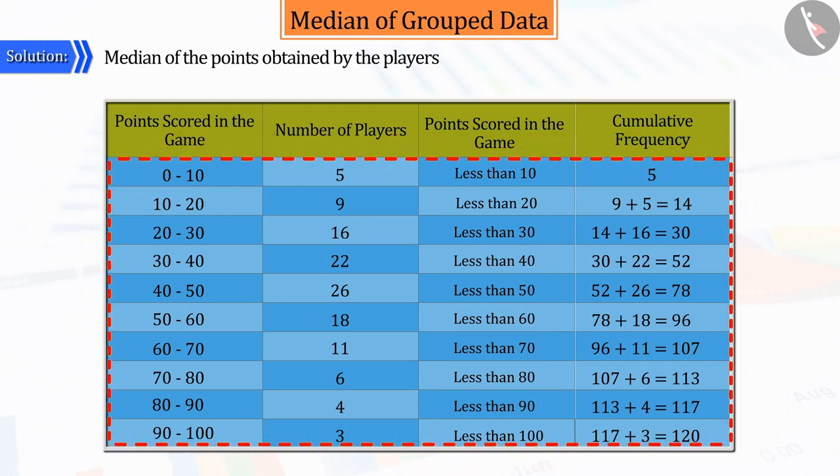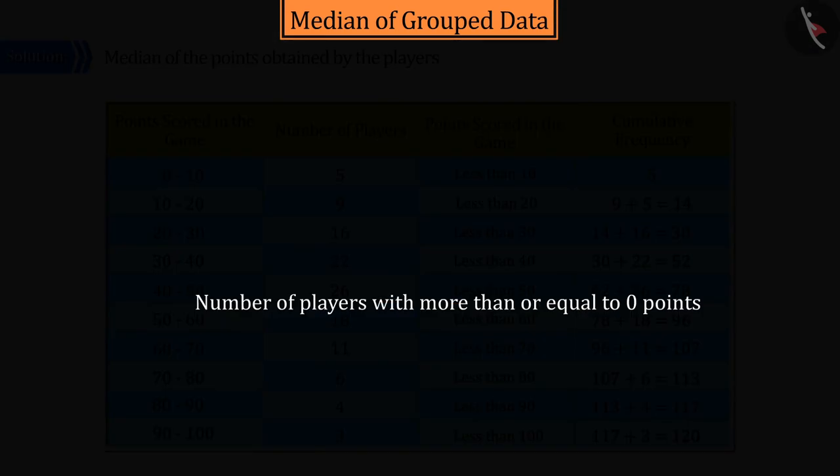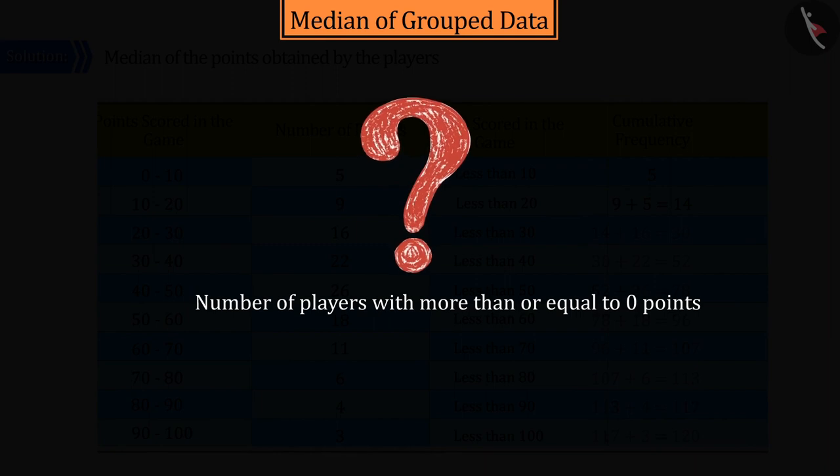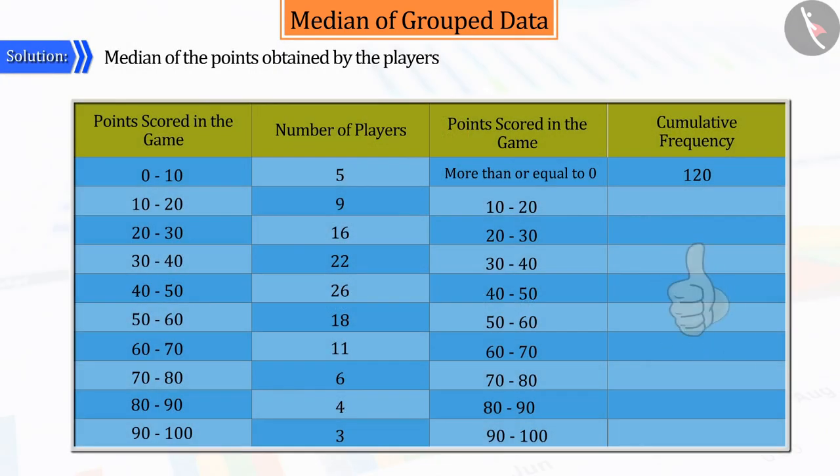But because of the given distribution, if you are asked, how many players got more than or equal to 0, then will you be able to tell? Absolutely correct. Here, all 120 players have scored more than or equal to 0.